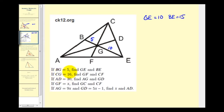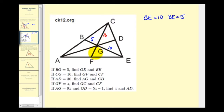Next we're given that CG equals sixteen. We want to determine the length of GF and CF. Looking at median CF, we're given the length of the longer segment that makes up the median. Therefore, the shorter segment would be half this length, so GF would be eight units. Therefore, the total length of CF would be twenty-four.